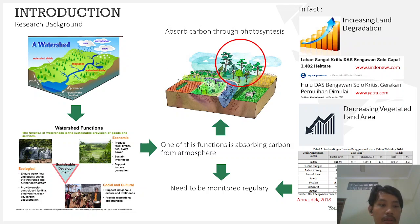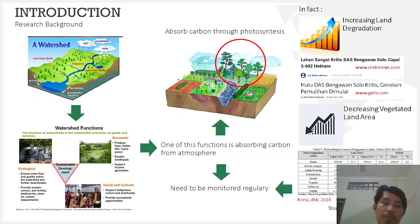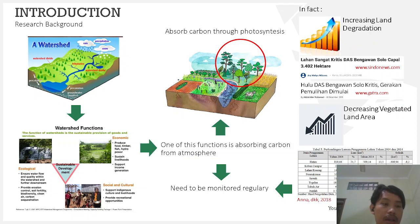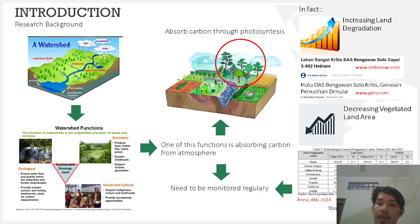Vegetated areas in watersheds are being converted to built-up land for human and industrial activities. This vegetated area conversion can change the ecological function to absorb carbon from the atmosphere. This condition has also happened in this watershed — during 10 years, there has been a 40% decrease in vegetated area, based on previous research conducted by Ana in 2018.